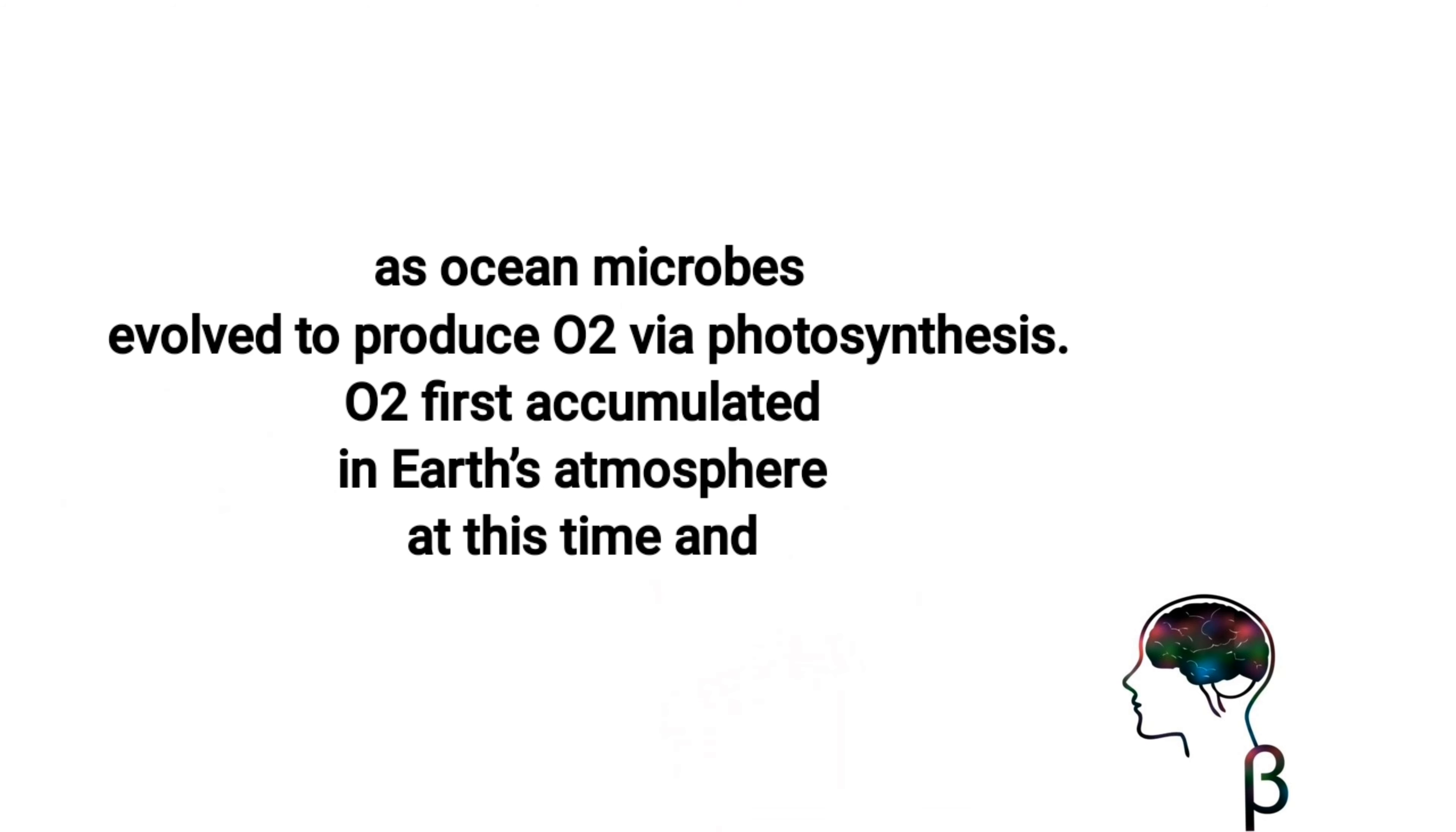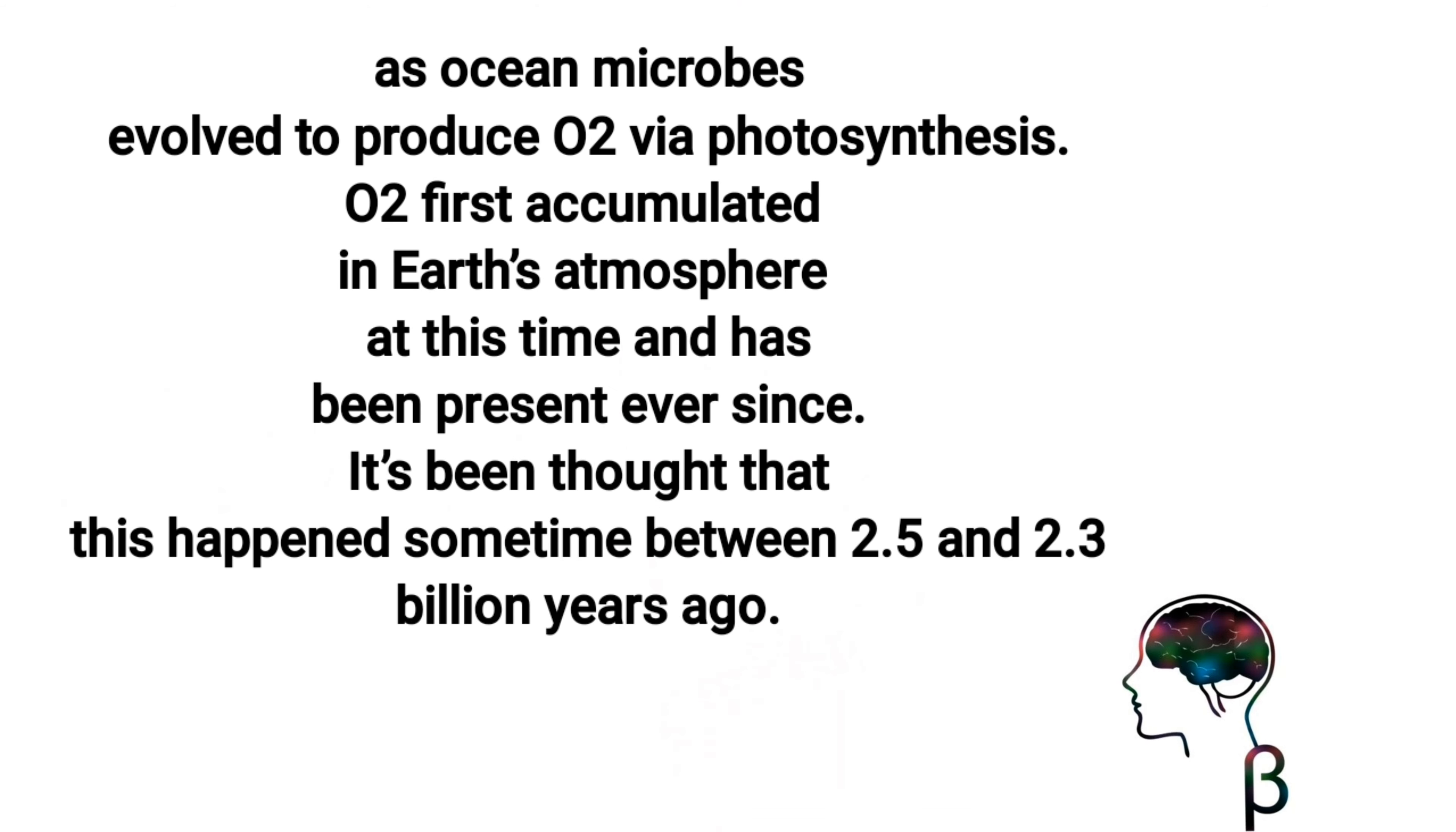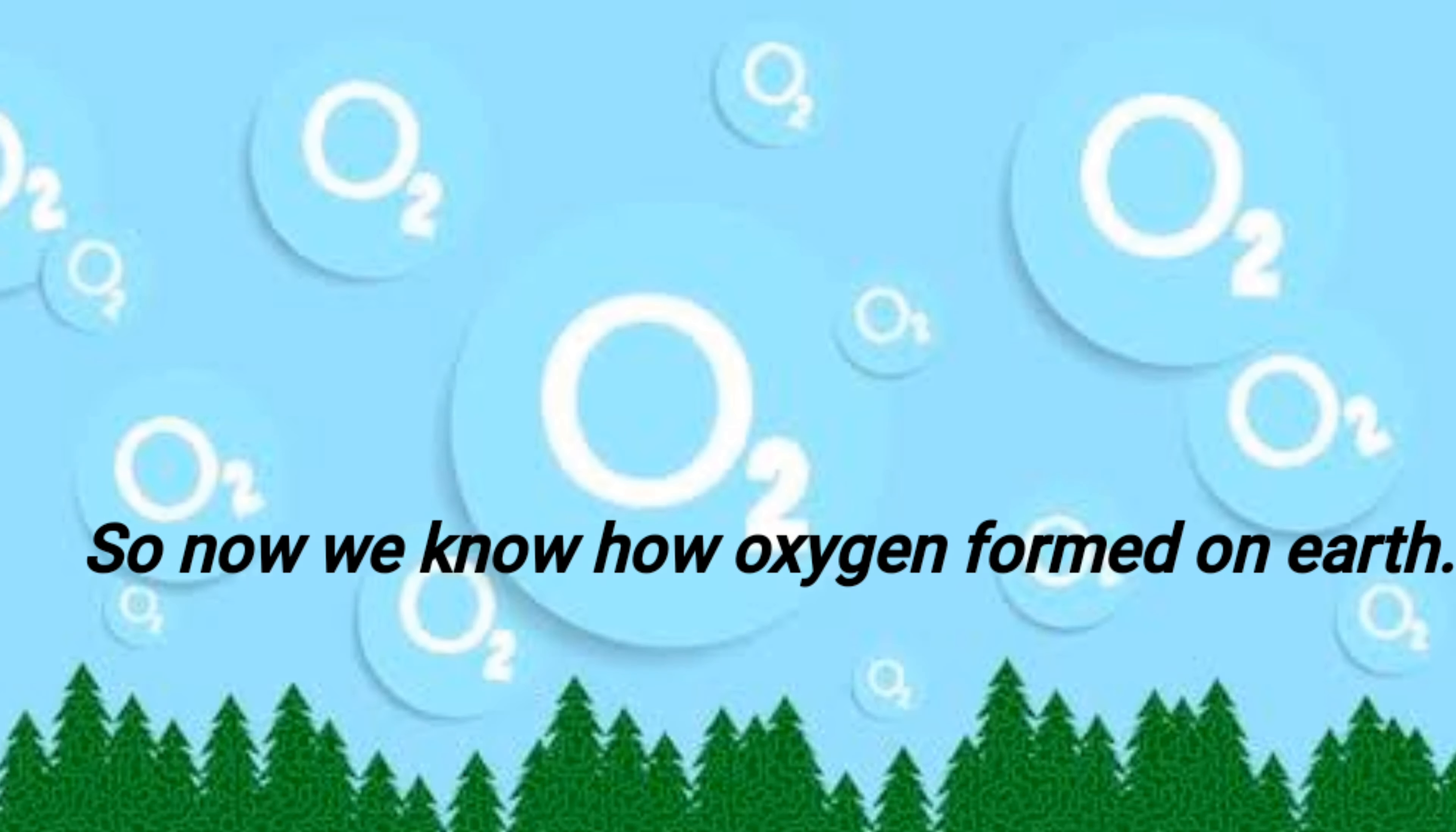As ocean microbes evolved to produce O2 via photosynthesis, O2 first accumulated in Earth's atmosphere at this time and has been present ever since. It's been thought that this happened sometime between 2.5 and 2.3 billion years ago.